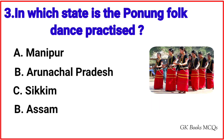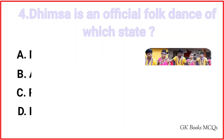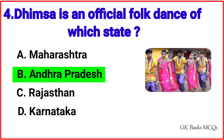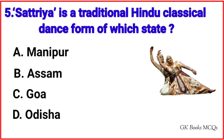Question number 3: In which state is the Punging folk dance practiced? Correct answer is option B, Arunachal Pradesh. Question number 4: Dhimsa is an official folk dance of which state? Correct answer is option B, Andhra Pradesh. Question number 5: Satriya is a traditional Hindu classical dance form of which state? Correct answer is option B, Assam.